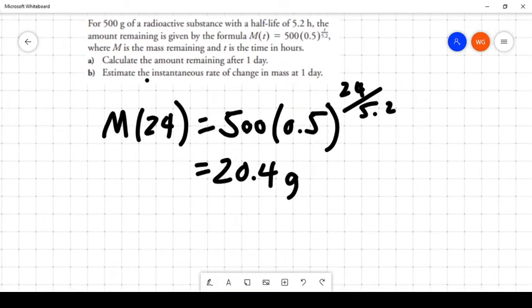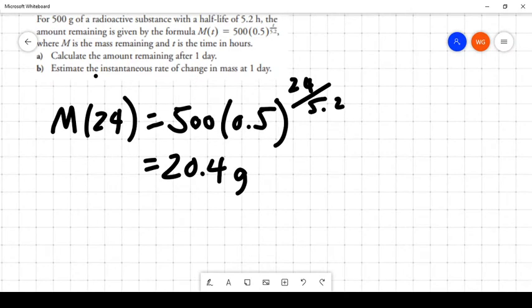It says estimate the instantaneous rate of change in mass at one day. So at the moment where 24 hours have passed, at what rate is the substance decaying? Well, we already have figured out what M(24) is. So to figure out rate of change, we're going to get a point that is very close to that 24-hour point.